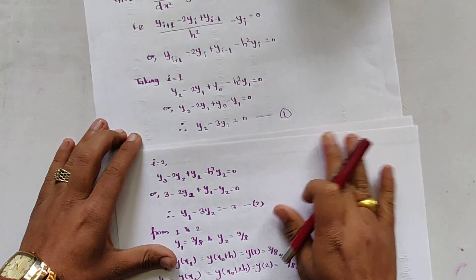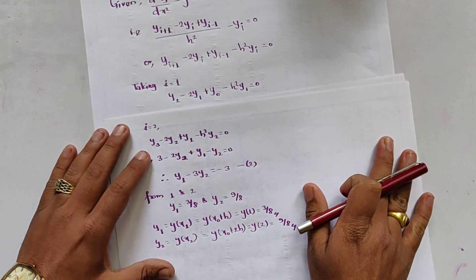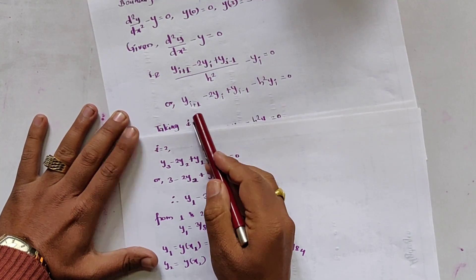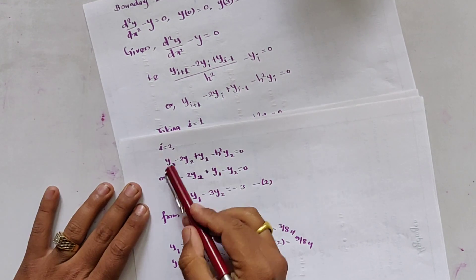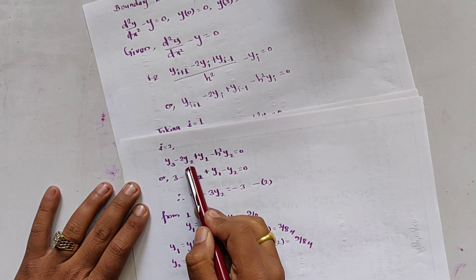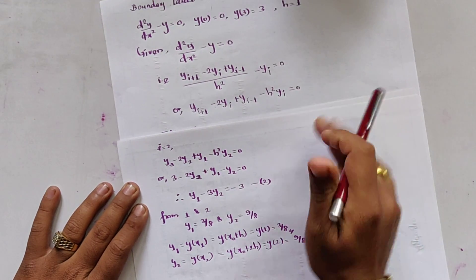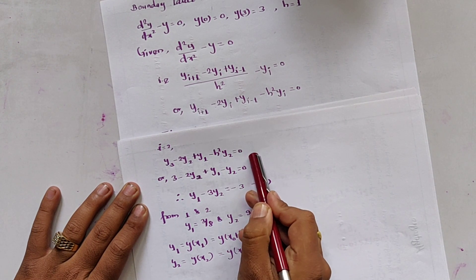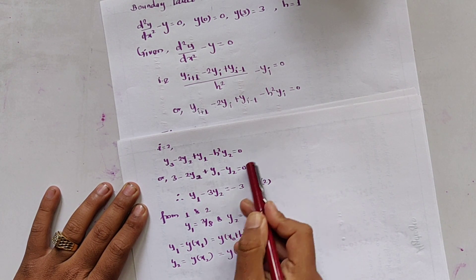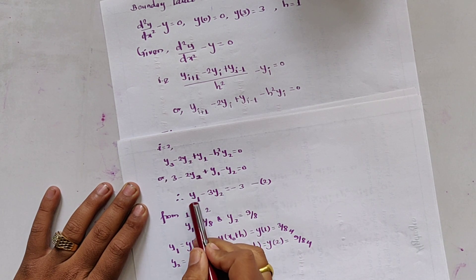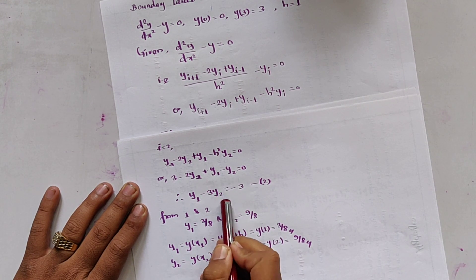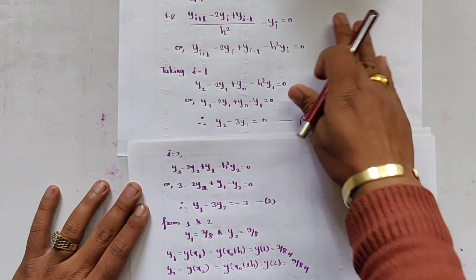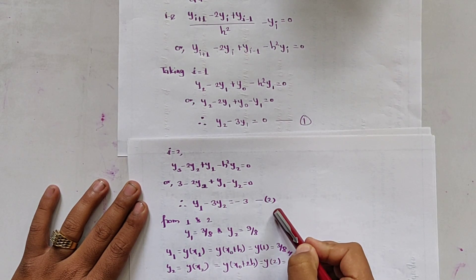Again taking i = 2: y_3 - 2y_2 + y_1 - h² y_2 = 0. Since y_3 = 3 and h = 1, substituting and solving we get y_1 - 3y_2 = -3. This is equation 2.